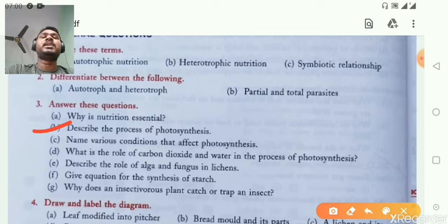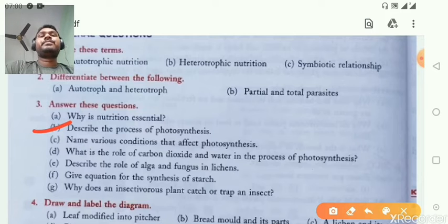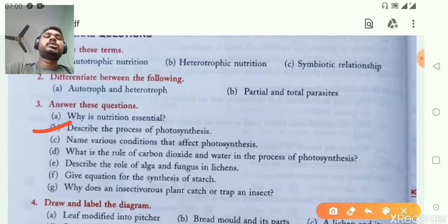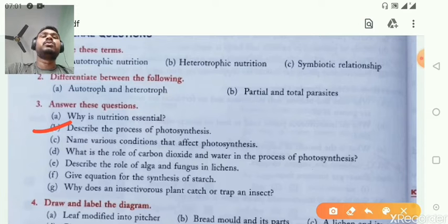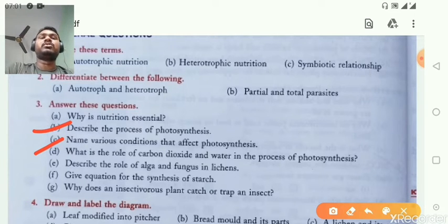The requirements for photosynthesis are carbon dioxide, water, sunlight, and chlorophyll. The products are glucose and oxygen.